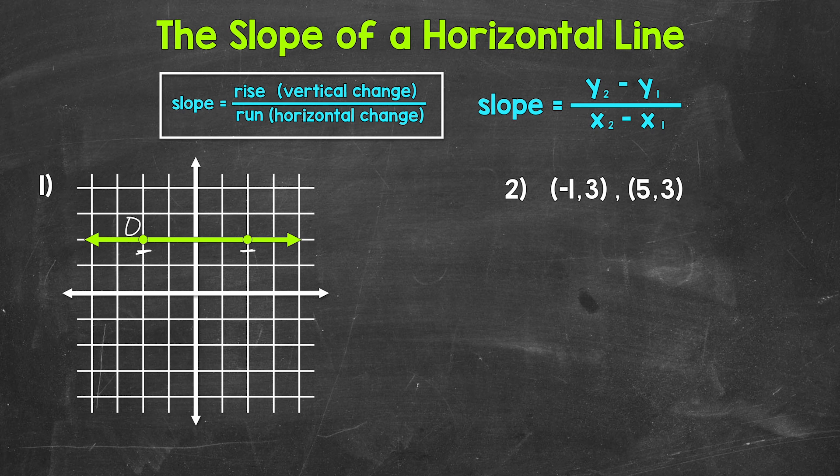Now for the run, the horizontal change. We go over one unit, two units, three units, four units to get to the other point. So our run is four. So slope equals rise over run. So our slope here for this line equals the rise of zero over the run of four. So zero over four. That's our slope.